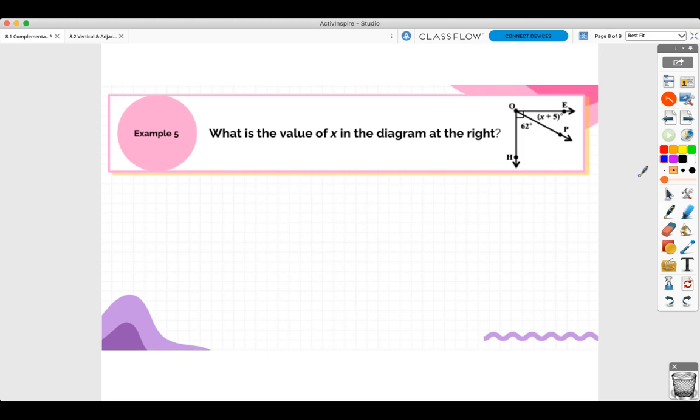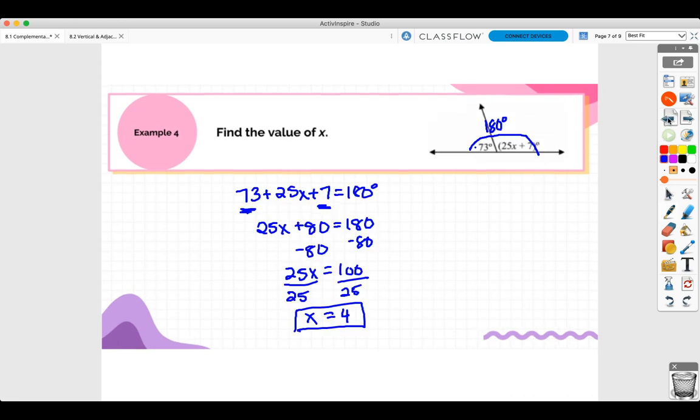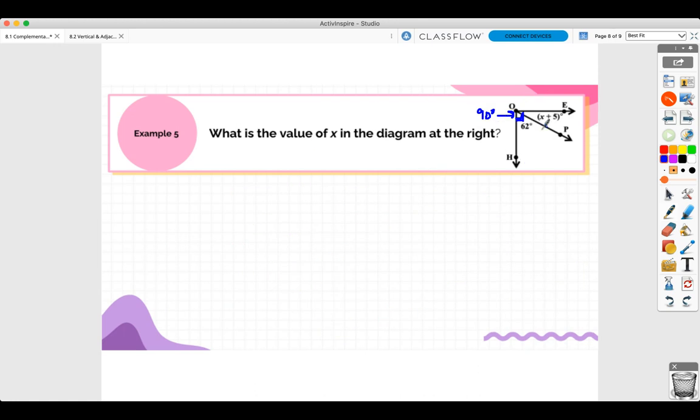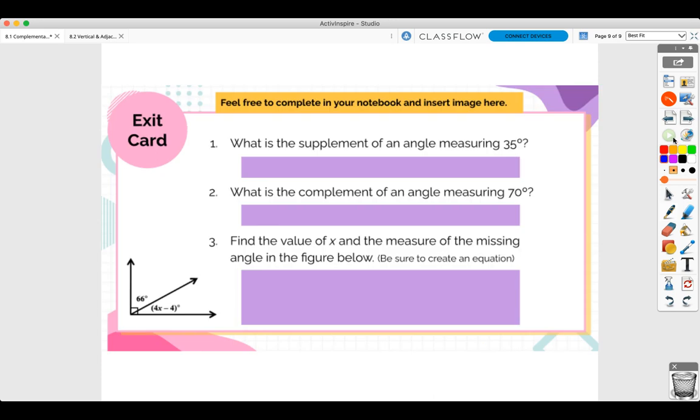Let's do another problem. What is the value of X in the diagram on the right? Well, what's different about this one? This one, they're telling you, this box over here tells you what? That tells you that it is 90 degrees. So these angles are, what was that term? We haven't done a problem like this in a while. Oh yeah, they're complementary. They're complementary angles. These are complementary angles, so they add up to 90 degrees. So you're going to have X plus 5 plus 62 is equal to 90 degrees. So combine our like terms. X plus 67 is equal to 90 degrees. Subtract 67. You're going to get X is equal to 23 degrees. And that's it.